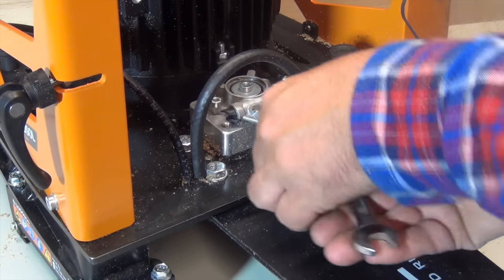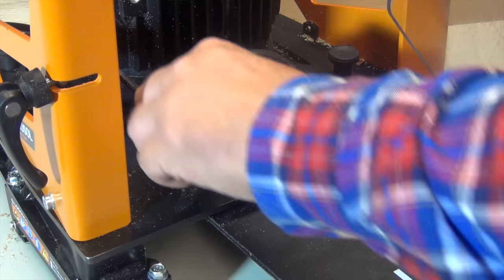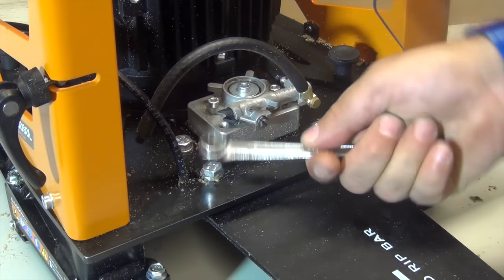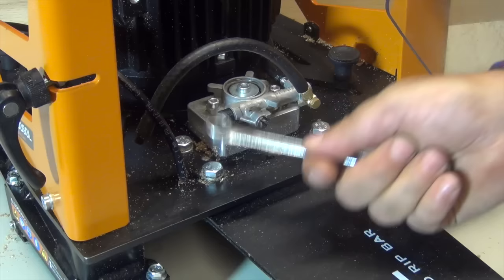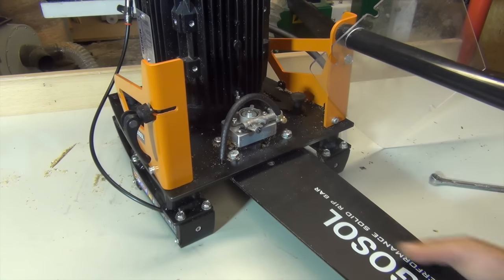To remove the bar you just loosen this bolt. And then just remove it. Just slide it out.